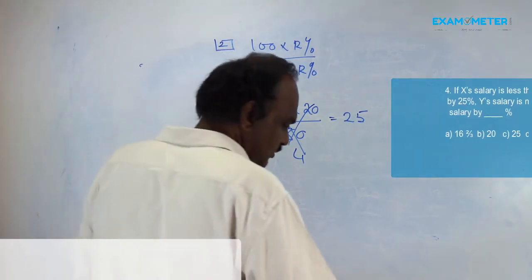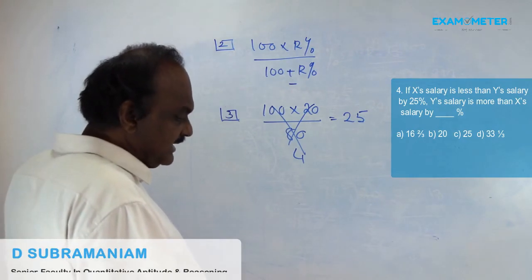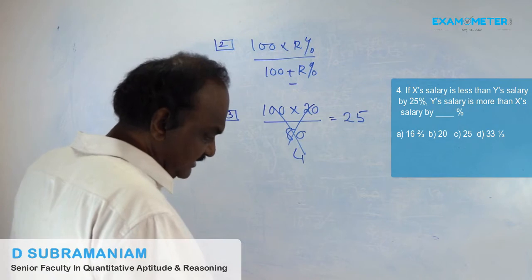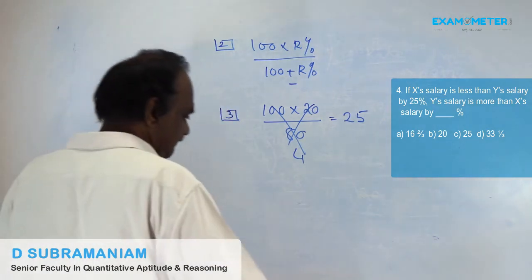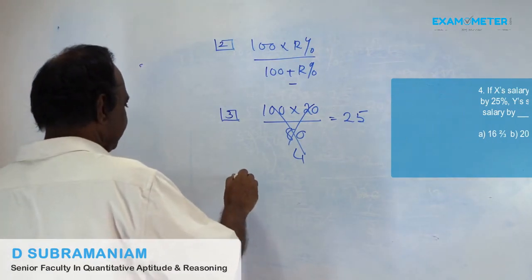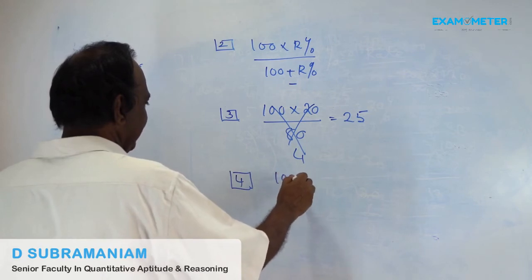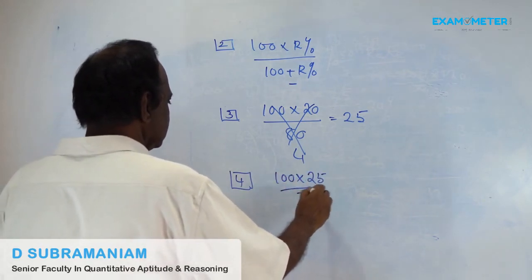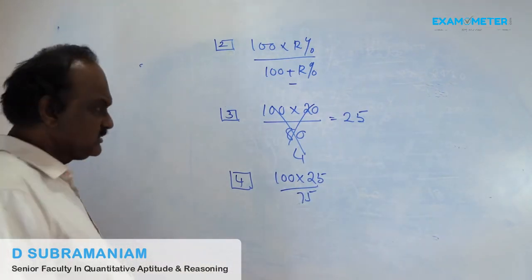Question number 4: If X salary is less than Y salary by 25%, Y salary is more than X salary by how much? Apply the formula: 100 × 25 / (100 − 25) = 100 × 25 / 75.